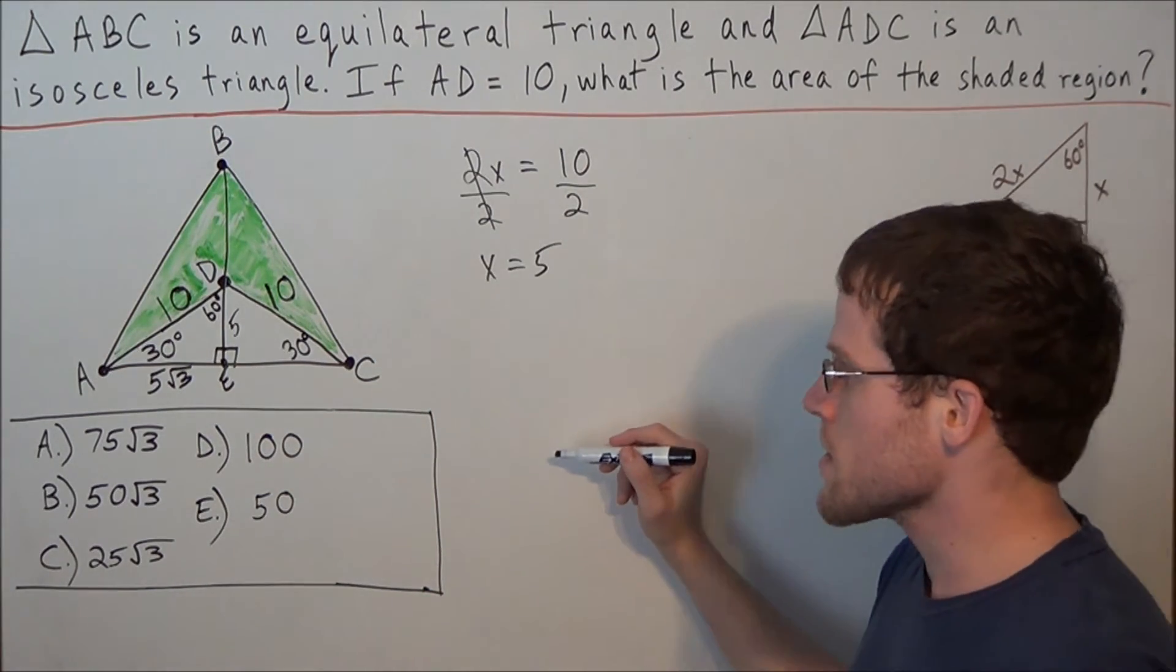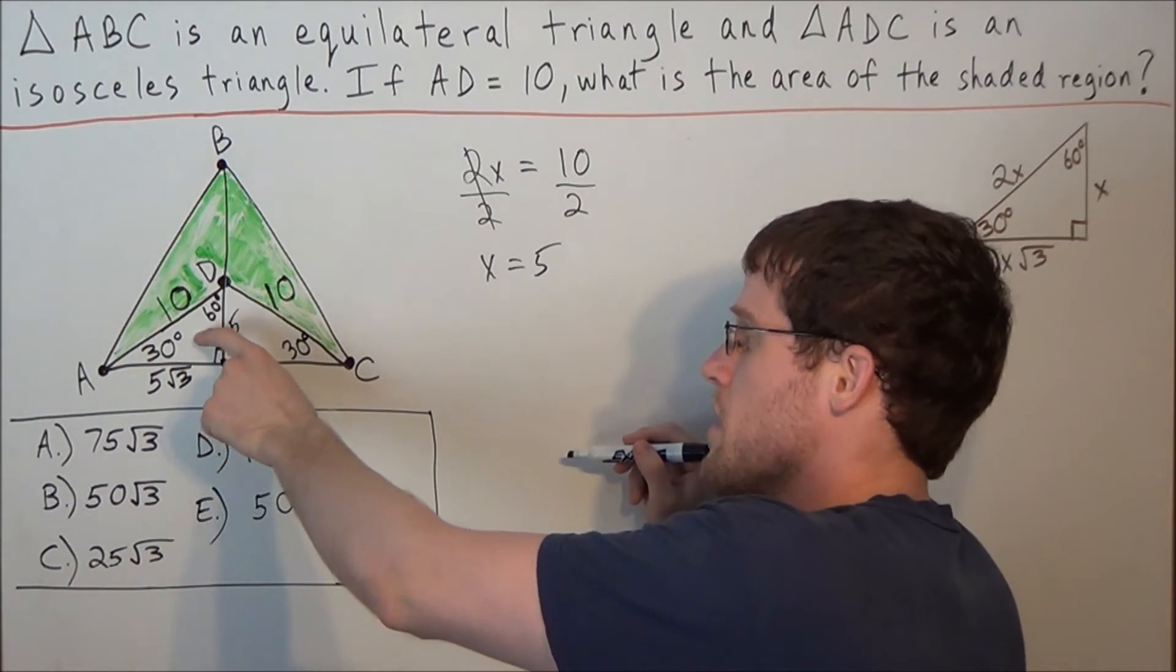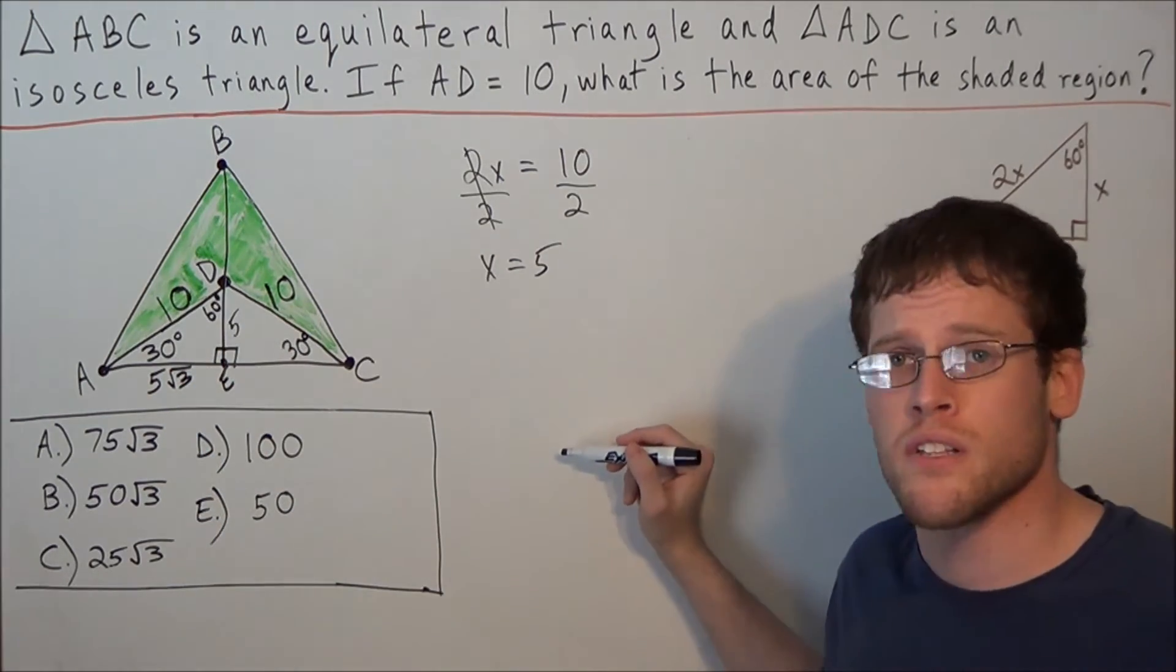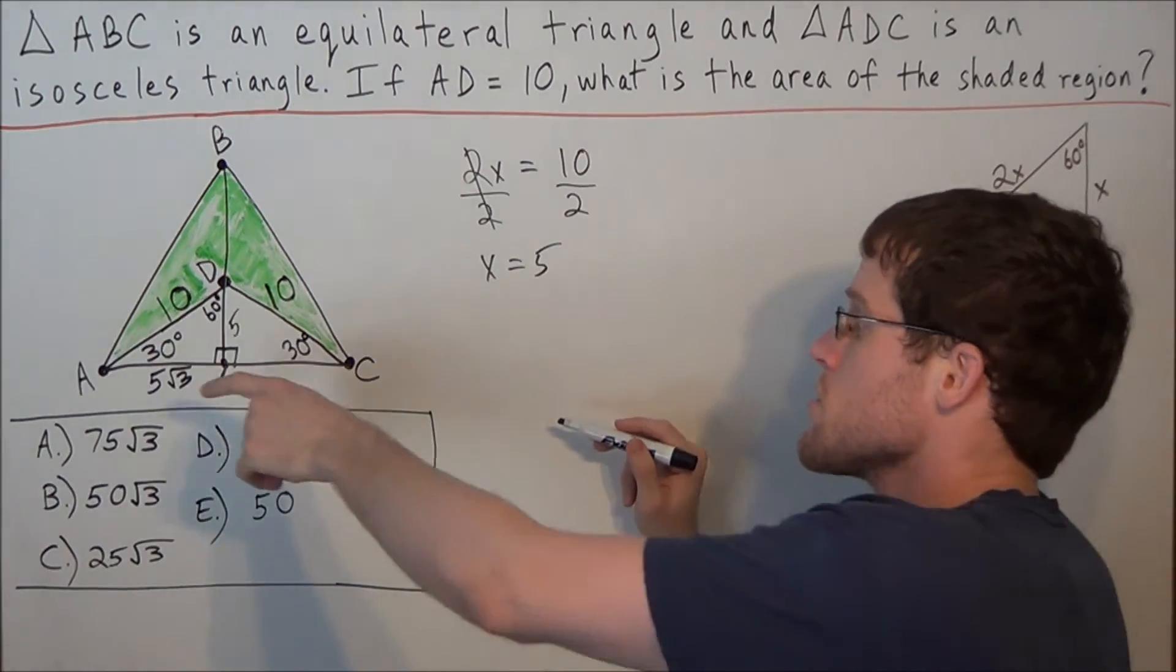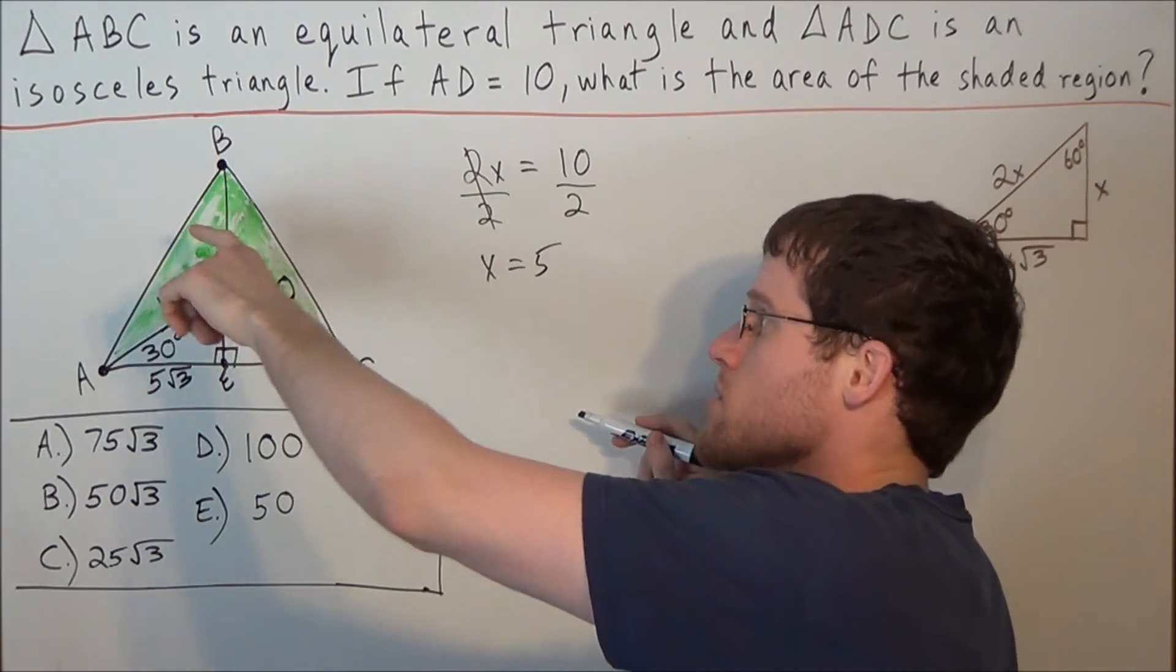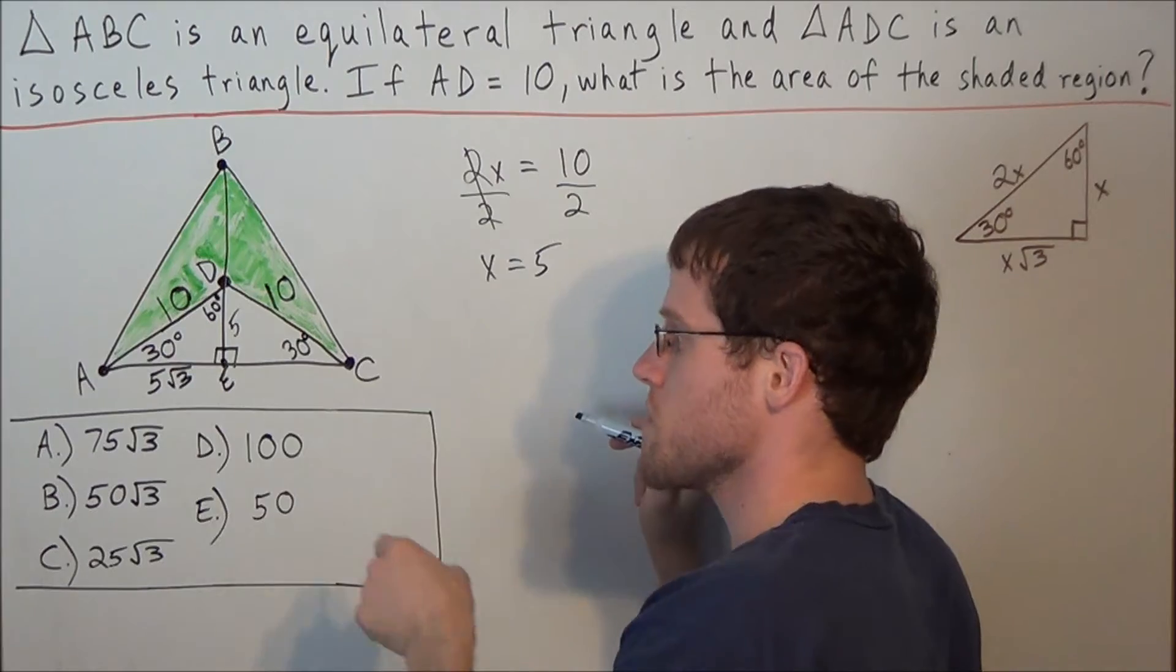So now we think about this, and we could move on and just find the area of the small triangle, but let's fill in some other information. Since the big triangle is equilateral, this tells us that all the angles are 60 degrees.